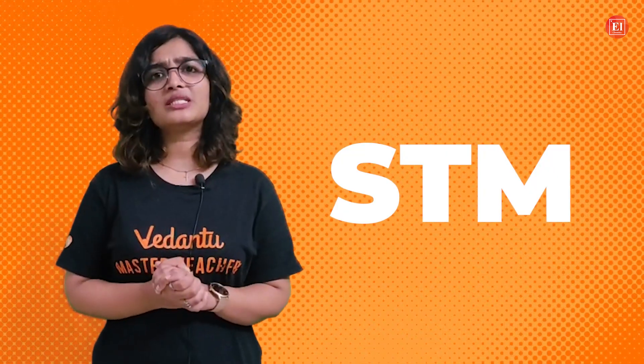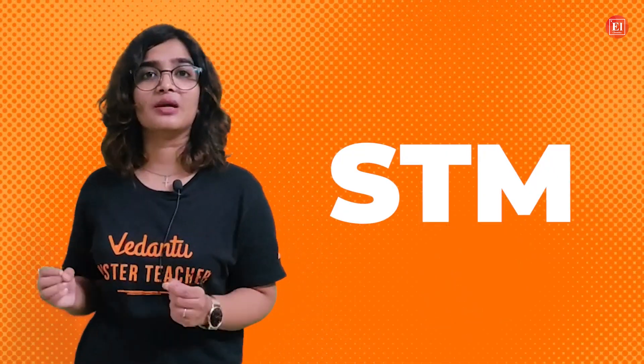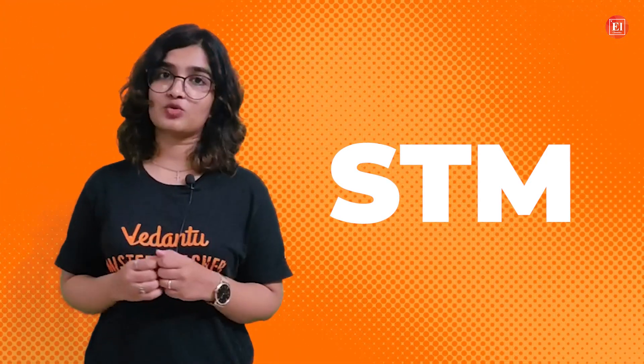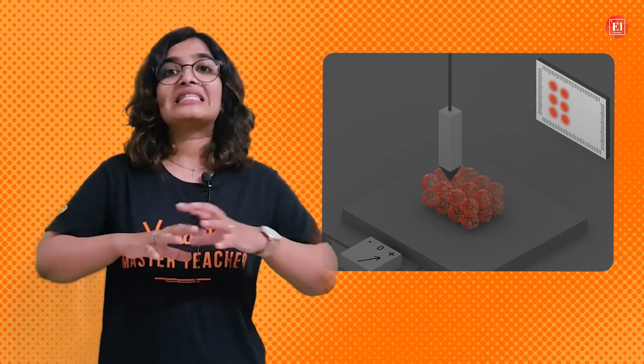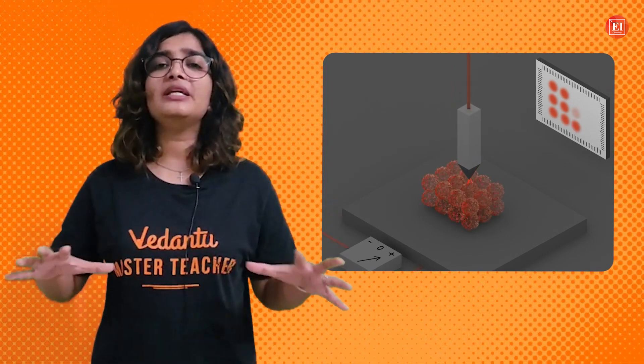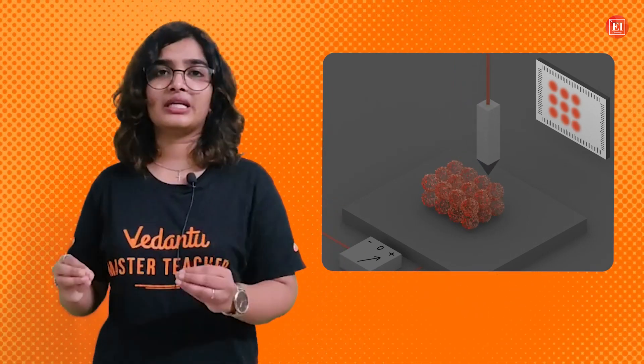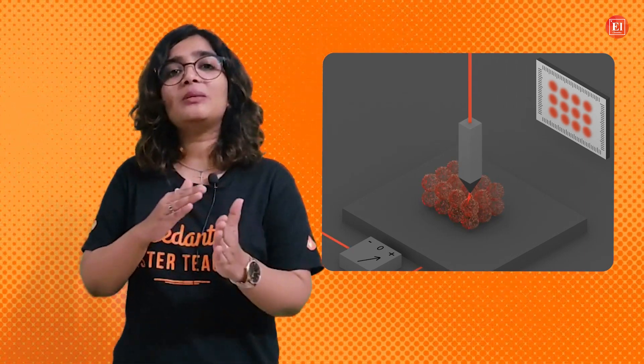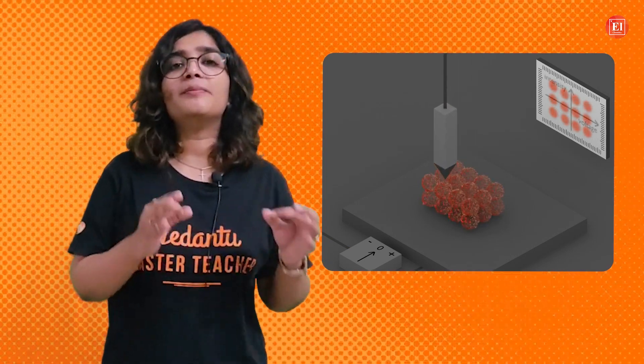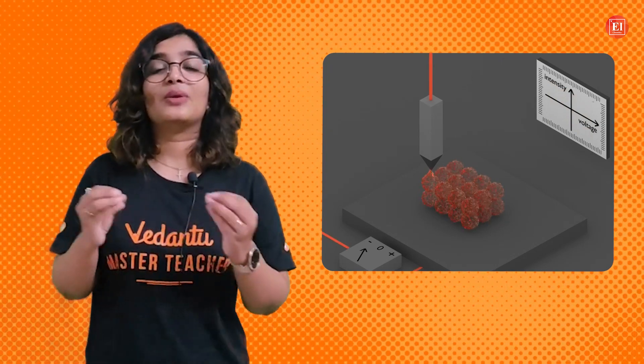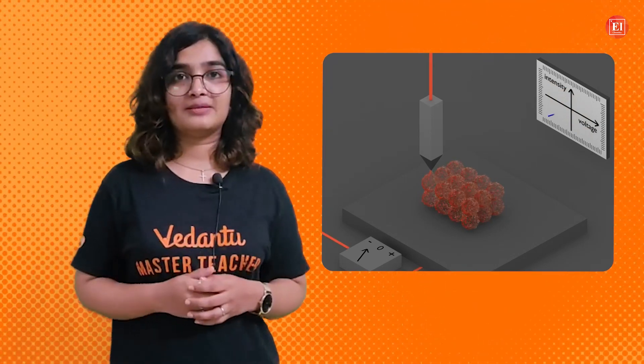Now, let us try to understand the working mechanism of STM, that is scanning tunneling microscope. Current is supplied to the tip or probe while the scanner moves rapidly across the surface of the conducting sample. When the tip encounters an atom, there will be change in the flow of electrons between the atom and the tip. The computer registers this change in current with the XY position of an atom.